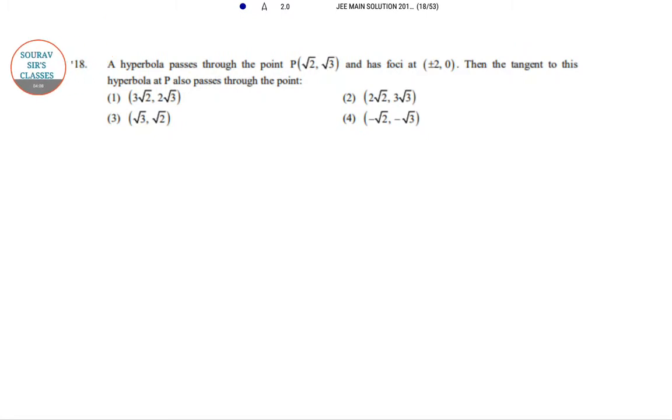Next one, a hyperbola based question. Let us draw that. Hyperbola passes through the point root 2 comma root 3, and the foci at plus minus 2 comma 0. Then the tangent to this hyperbola at p also passes through which of the point.